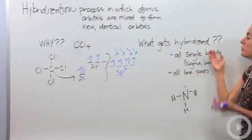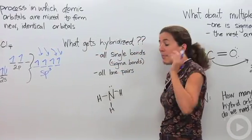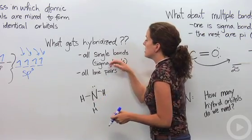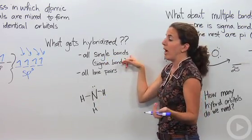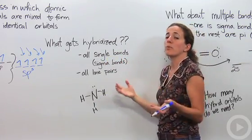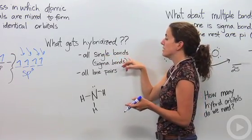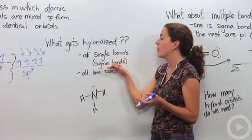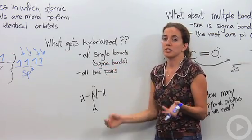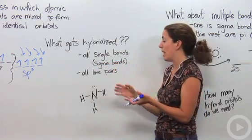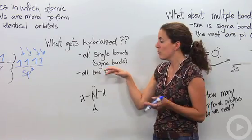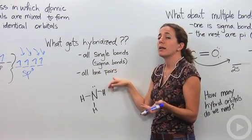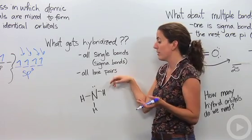So what actually gets hybridized? All single bonds are going to be hybridized because there's not one that's more energetic than another. Because they're hybridized bonds, we're going to call single bonds sigma bonds — it's just the way the orbitals overlap. Lone pairs are also going to be hybridized, because they're not higher or lower in energy than those bonds either.